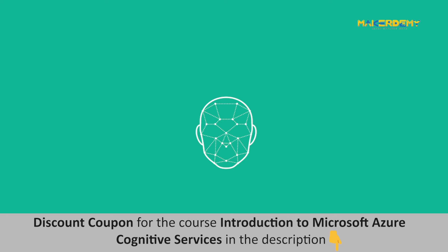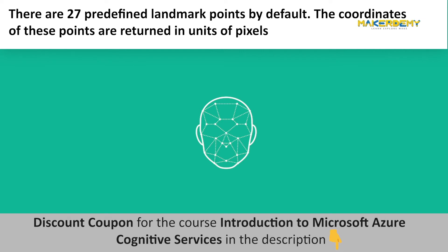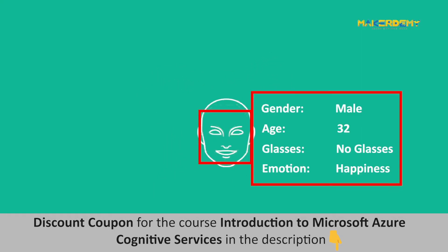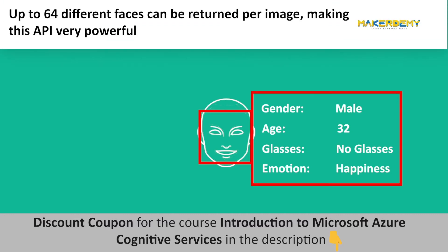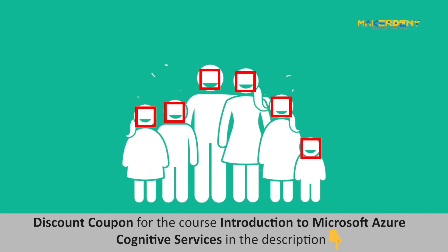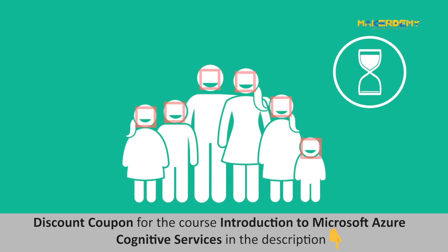Face landmarks are a set of easy-to-find points on a face, such as the pupils or the tip of the nose. There are 27 predefined landmark points, and by default their coordinates are returned in units of pixels. Additionally, face detection can extract face-related attributes such as gender, age, emotions, pose, facial hair, masks, smile intensity, and whether the person is wearing glasses. These attributes are general predictions, not actual classifications. Up to 64 different faces can be returned per image, though the more faces detected, the longer detection takes.